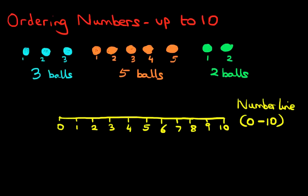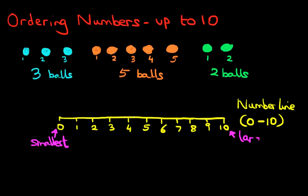So now what we have to do is plot the balls onto the number line. Just remember that zero is the smallest and ten is the largest. So once we plot this, we will know which balls are the smallest amount and then gradually move up to the middle ones and then the largest. Let's have a look at the blue balls — there are three. Let's put a nice big dot over here at number three on the number line.